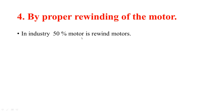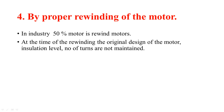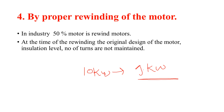The next point is proper rewinding of the motor. In industry, 50% of motors are rewound motors. At the time of rewinding, the original design of the motor — insulation level and number of turns — are not maintained. For example, if the load is 10 kW but after rewinding only 9 kW is available, the motor will be overloaded.